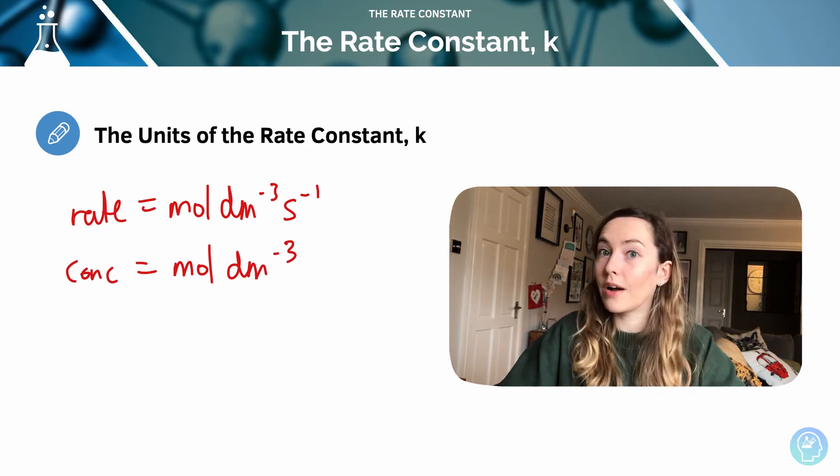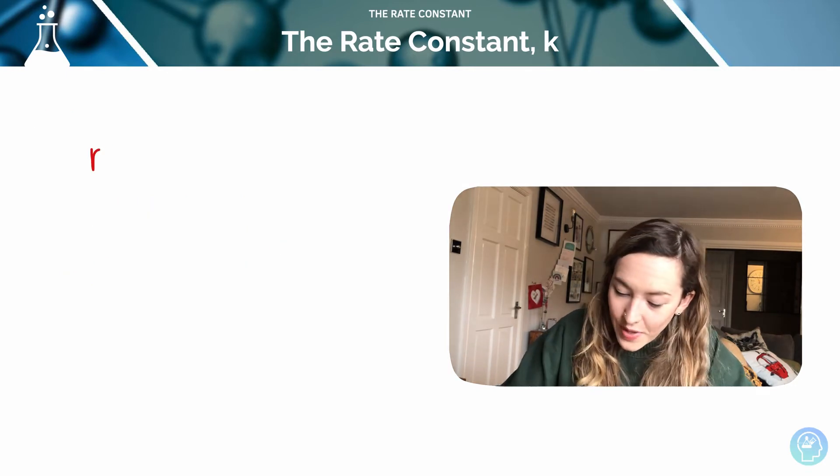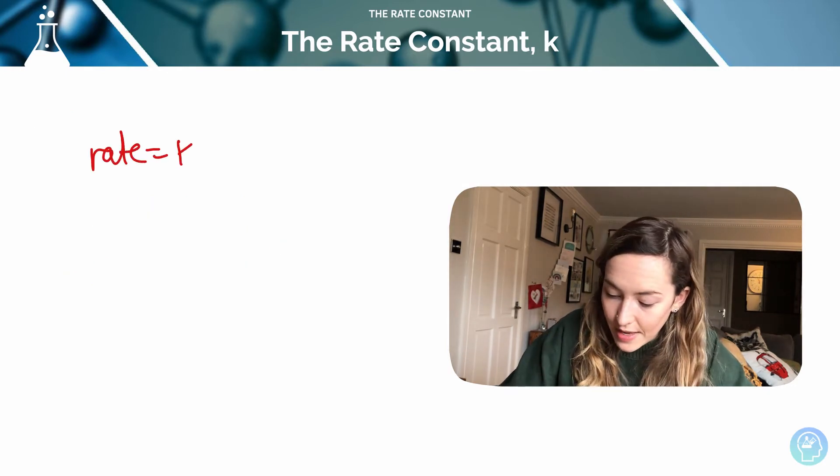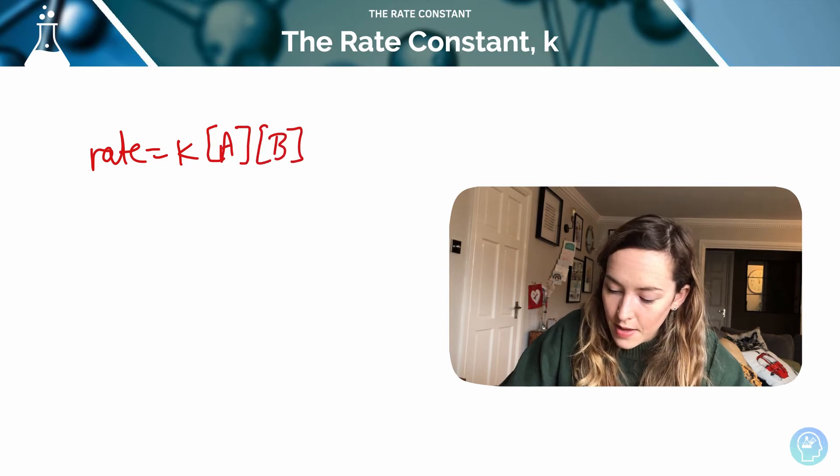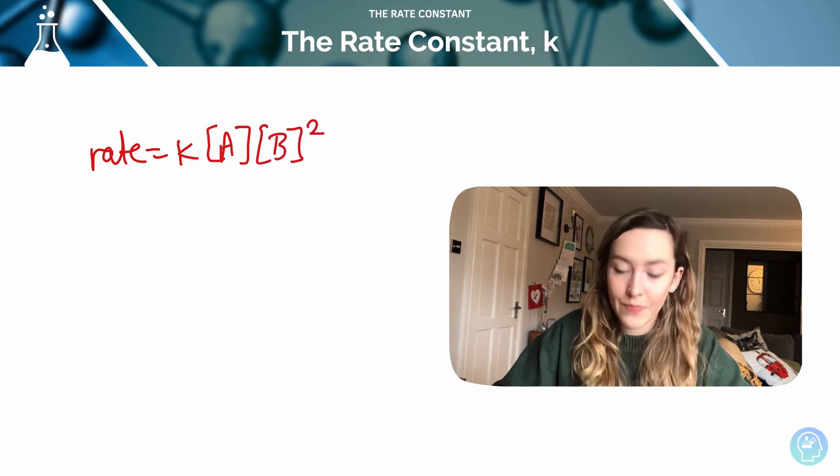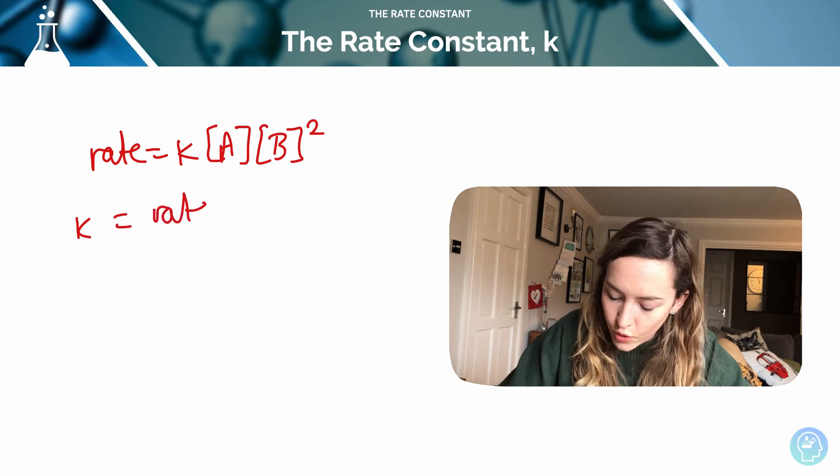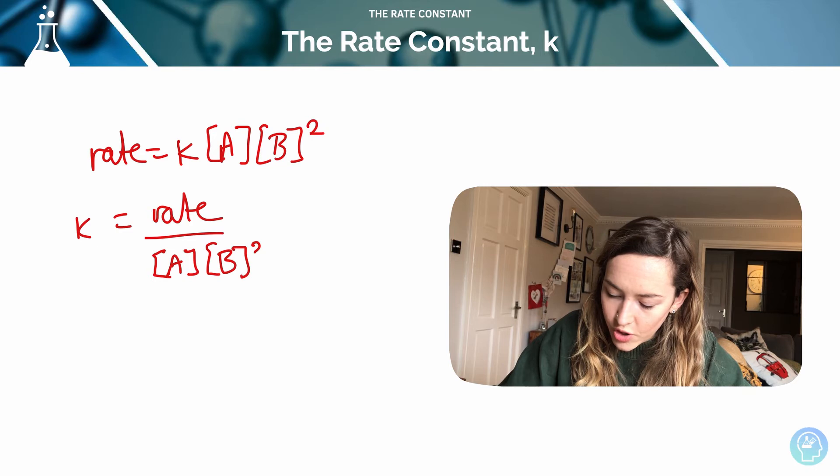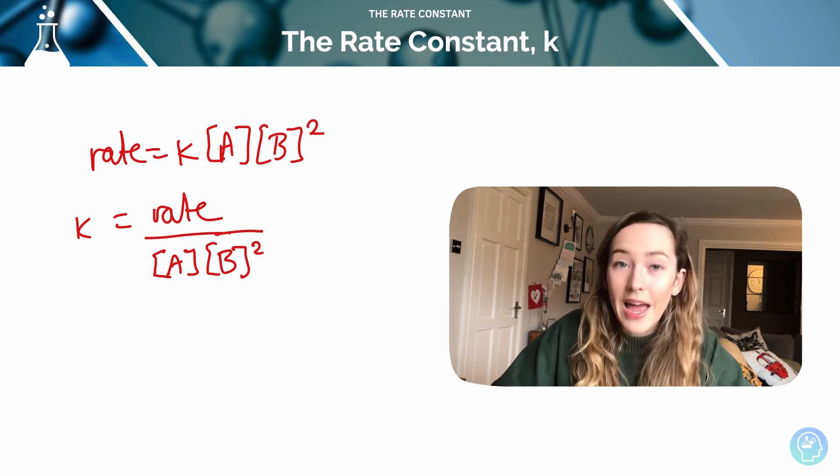So we can plug those values in, cancel them out and work out our units for k. Here's an example. So again for my reaction, rate is equal to k, our constant, A, B to the power of 2. Let's use that one again. So we said that k is equal to rate over the concentration of A times the concentration of B raised to the power of 2. Let's work out our units.